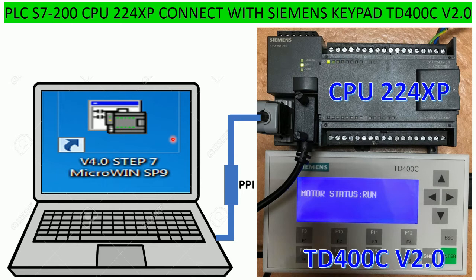I will use the PPI cable to connect from my PC to the PLC using one port, and another port I will connect to the keypad TD 400C version 2. Let's go to our software Step 7 Micro/WIN version 4 SP9 together to create the sample program or wizard.